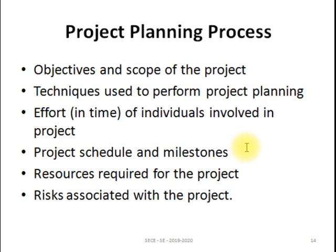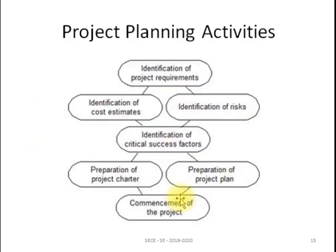The project planning process has six different steps. We calculate the objectives and scope of the project, then concentrate on techniques used to perform project planning, the individual efforts involved, project schedule and milestones, resources required, and risks associated with the project. When planning a project we follow these activities: first identify the project requirements, then proceed to identification of cost estimation and identification of risk. Requirements are given by stakeholders.